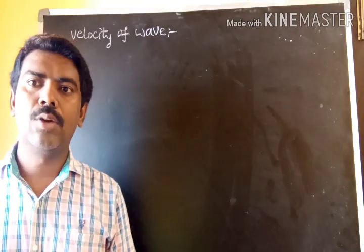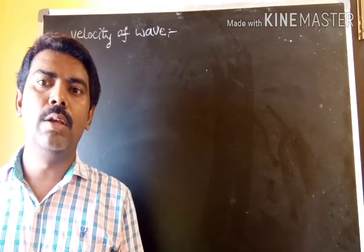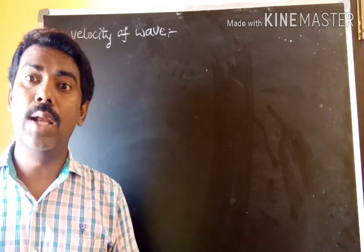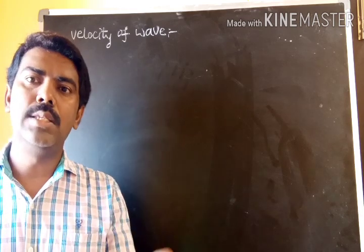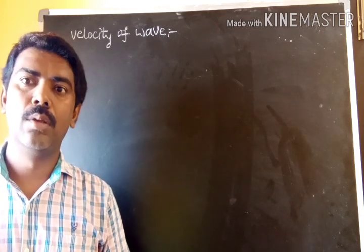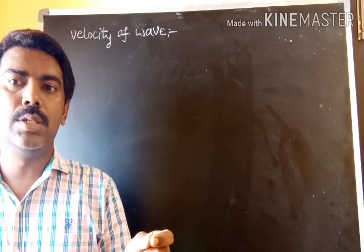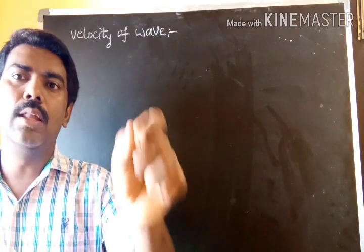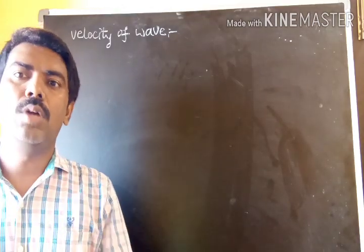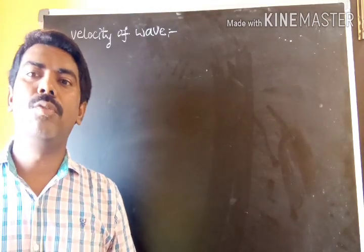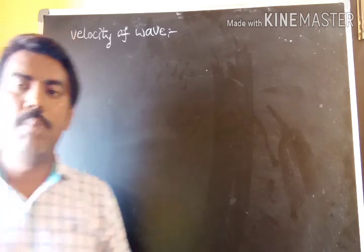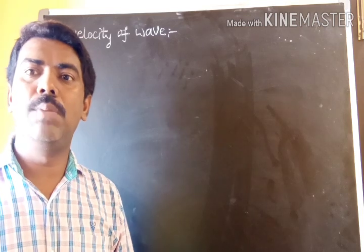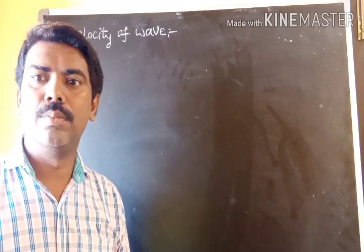When it comes to an electromagnetic wave, the distance traveled by one wave in one second is called the velocity of wave. In a unit time, the distance traveled by the electromagnetic wave is its velocity. The velocity of wave is denoted by the capital letter C.